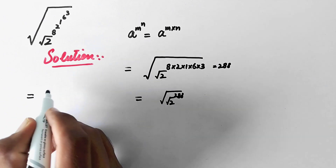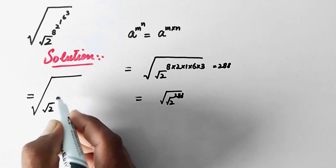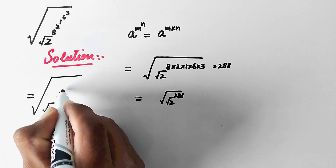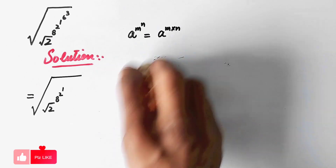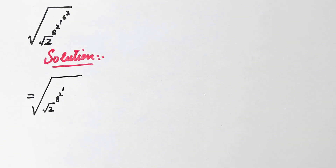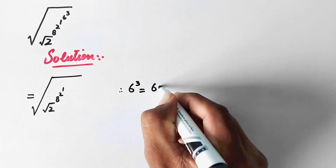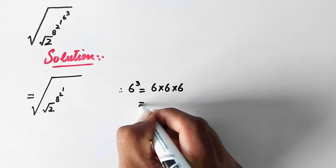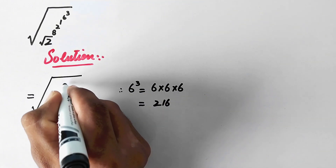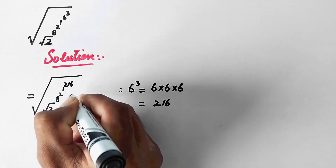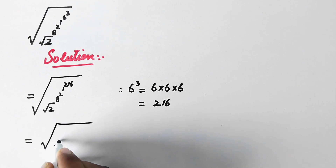In the first step, we write: square root times square root times square root of 2 to power 8 to power 2 to power 1 to power 6 to power 3. We solve from the top: 6 to power 3 equals 6×6×6. Since 6×6=36 and 36×6=216, we get 6³=216. So the expression becomes 1 to power 216.